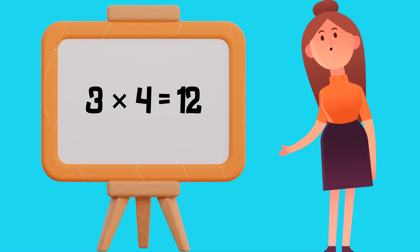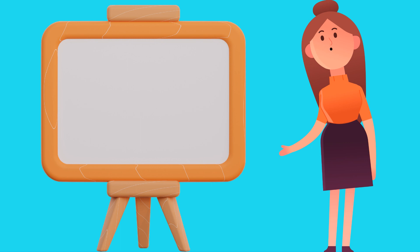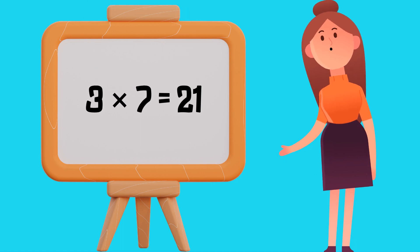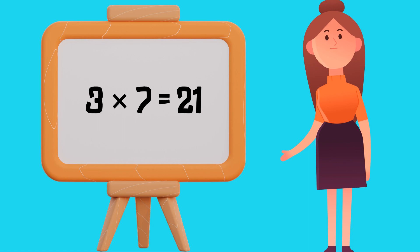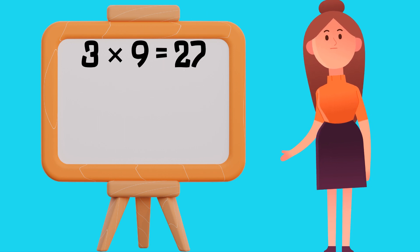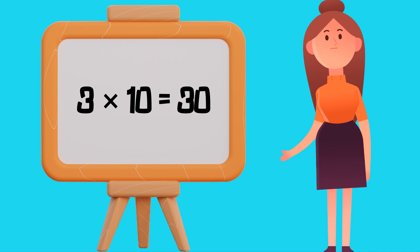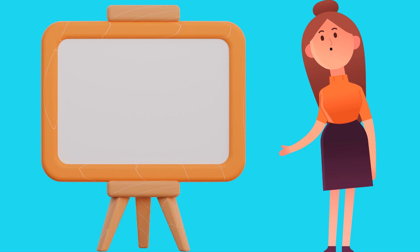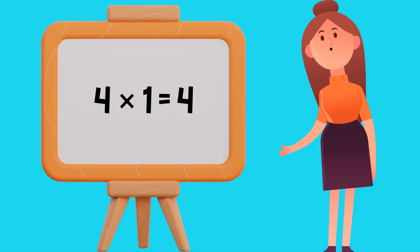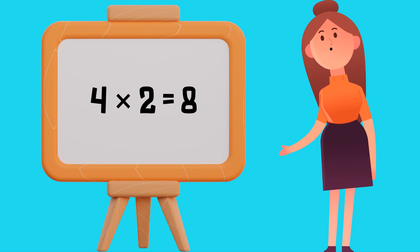Table of 3: 3 1's are 3, 3 2's are 6, 3 3's are 9, 3 4's are 12, 3 5's are 15, 3 6's are 18, 3 7's are 21, 3 8's are 24, 3 9's are 27, 3 10's are 30.